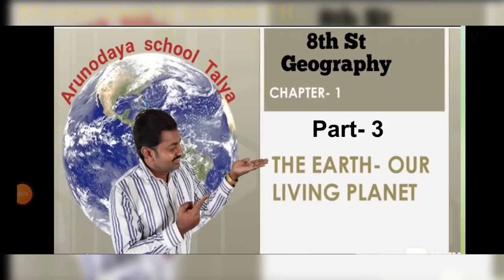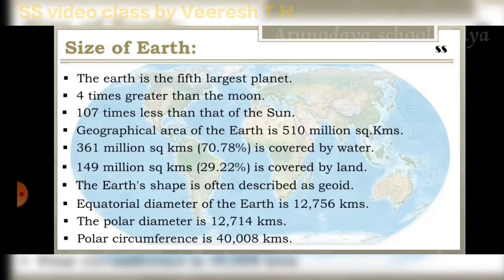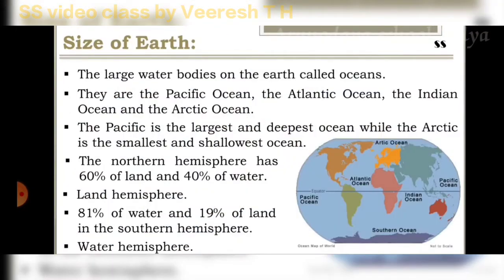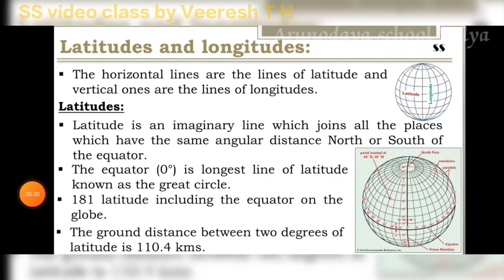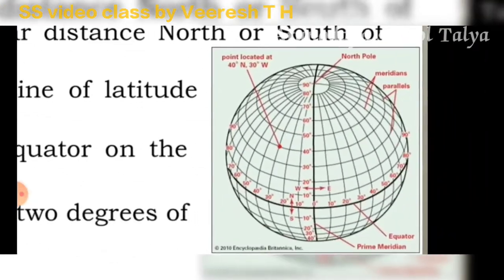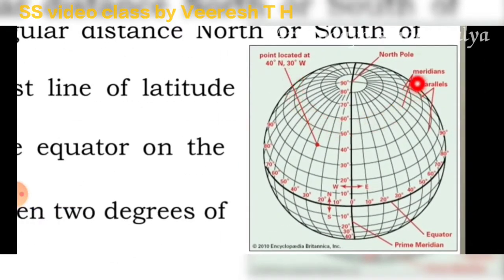Welcome back to Social Science class. In the previous class we discussed about the Earth, our living planet. Today we are going to learn about latitudes and longitudes. Latitudes means horizontal lines, and longitudes means vertical lines. The horizontal lines are the lines of latitude and the vertical ones are the lines of longitude.